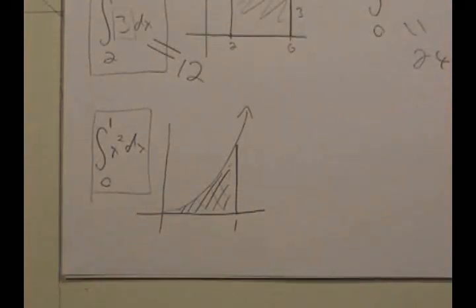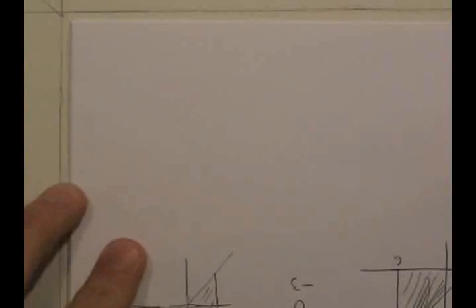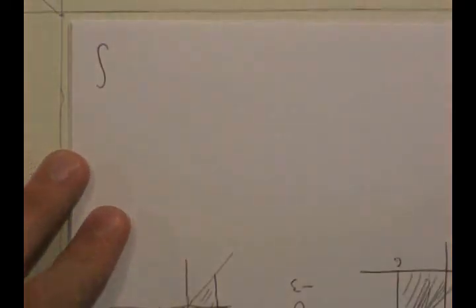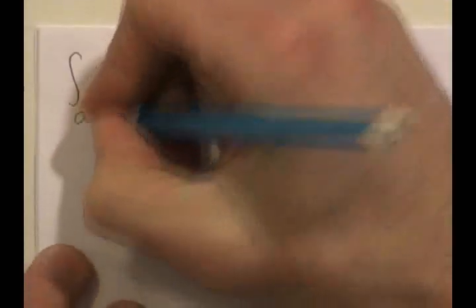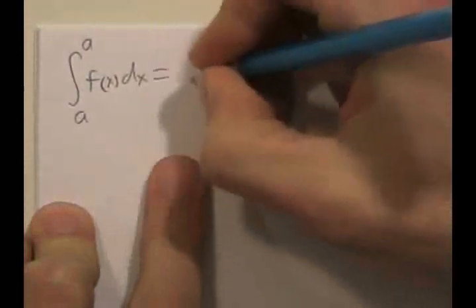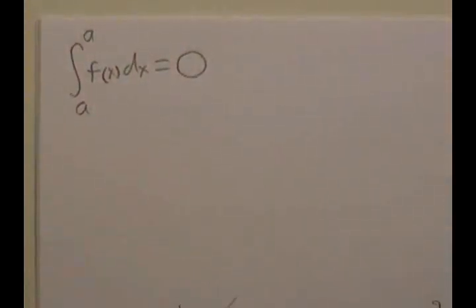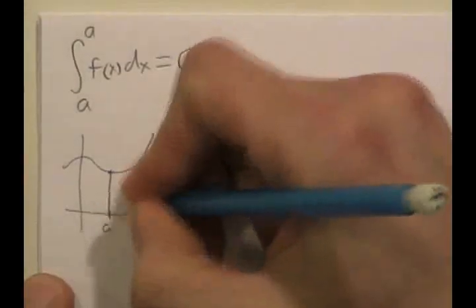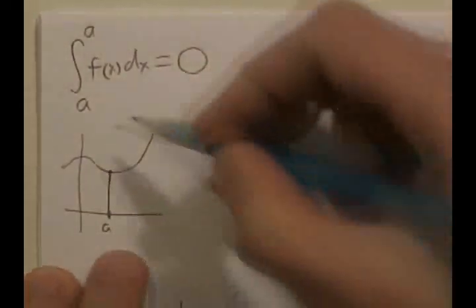I want to talk a little further about the properties of this notation. Keep in mind that this notation is just something people made up, and we're attributing these properties to it because we want it to make sense. Property 1: if we ever come across something like the integral from A to A of F of X DX, we're going to define this to be 0, no matter what. The area under a point from A to A is just nothing — there's no area there.